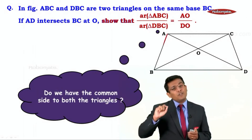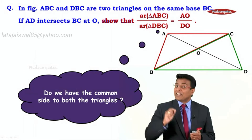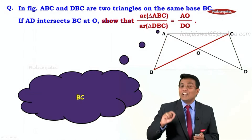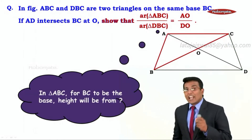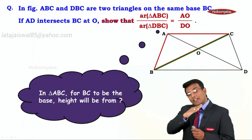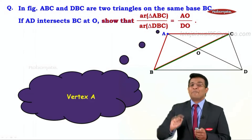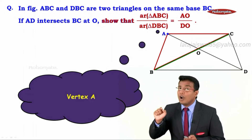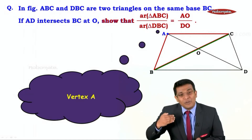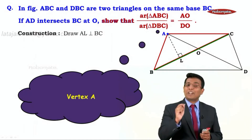If you observe these two triangles, do they have a common side? Yes, they have a common side — it is BC. So in triangle ABC, for BC to be the base, the height has to be drawn from A. So we construct AL perpendicular to BC.